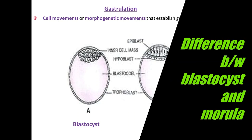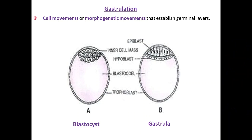So from these two diagrams we can understand the difference between the blastocyst and the gastrula. Note that this diagram of the gastrula is not given in your NCERT - only the blastocyst is given. But to understand the theory of the next topic, these diagrams will make it easier for you. For the board exam, drawing this B diagram is not very important, but to understand the NCERT topic you should go through the next three or four extra diagrams for your understanding and for objective questions.